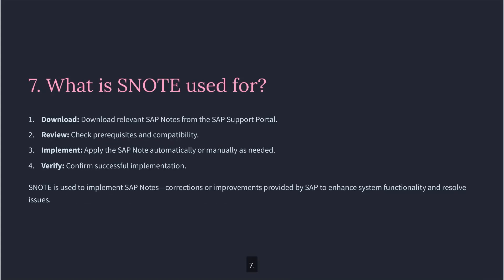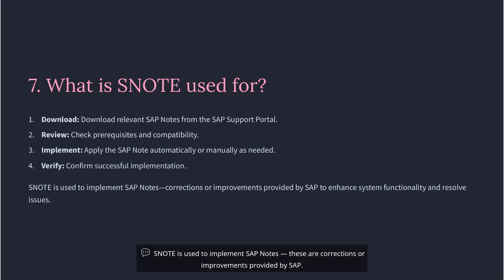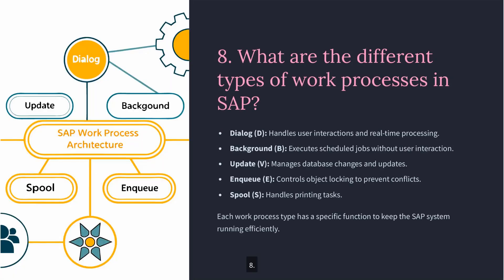Question 7: What is SNOT used for? SNOT is used to implement SAP notes. These are corrections or improvements provided by SAP. I download the relevant note, review the prerequisites, and implement it either automatically or manually depending on the type.